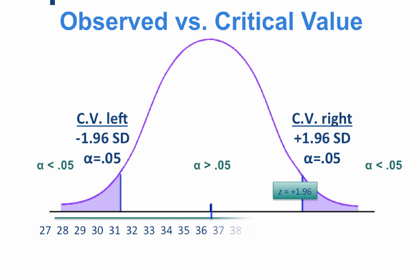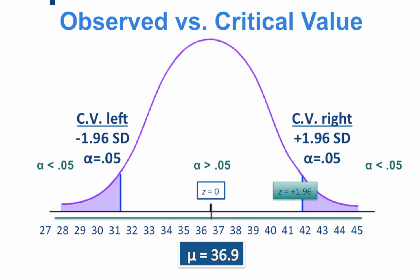We can add our number line across the bottom. These represent sample means. Our population mean is 36.9. The mean of a z-distribution is always 0, so the mean of 36.9 corresponds to a z-score of 0. We calculated a sample mean of 44.2, which has an accompanying z-score of positive 3.65.